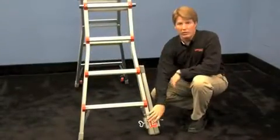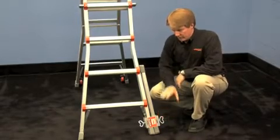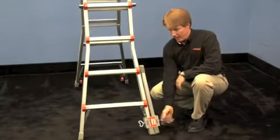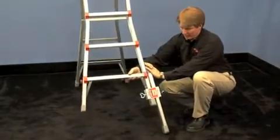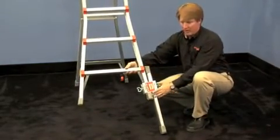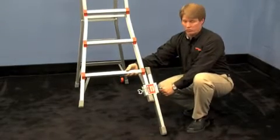Once you have your leg leveler attached to the bottom of your ladder, you can loosen the outside wing nut and raise your ladder up and telescope that channel down to the height you need depending on if you're working on a staircase or some kind of uneven surface outside.